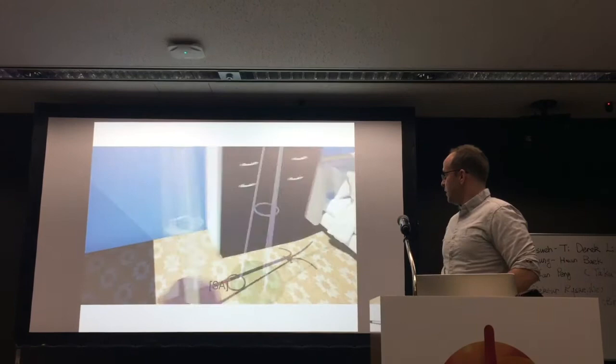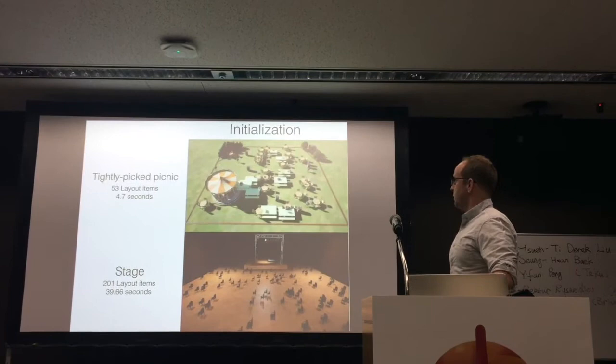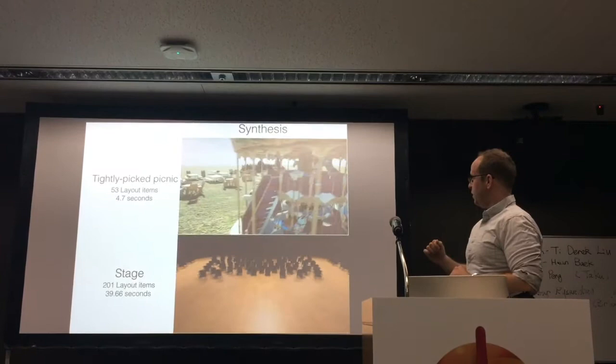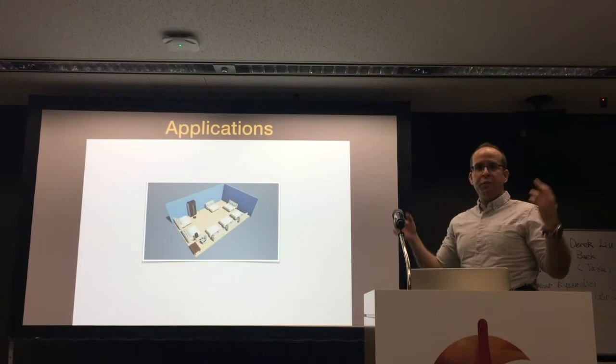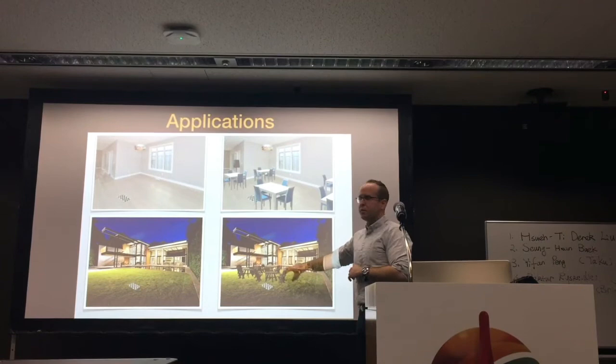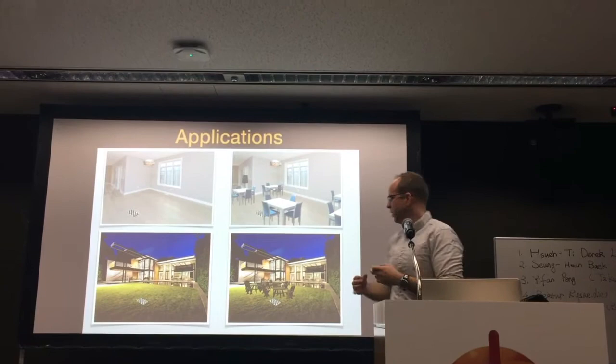Some more results: we have a picnic scene and a stage scene, and they look really nice. Beyond synthesizing virtual layouts, one idea is to take pictures of a real layout and synthesize things inside them. A user can take a picture and imagine how their interior or exterior would look with virtual actors placed inside. This work was published at the SCB workshop last year.